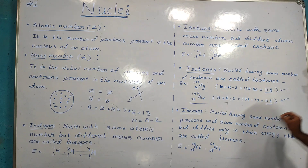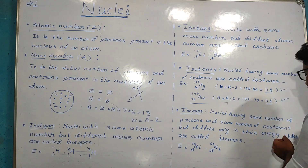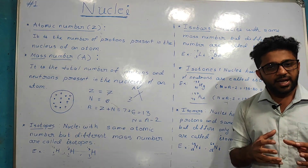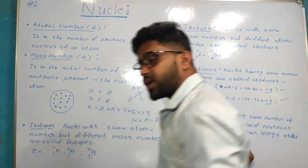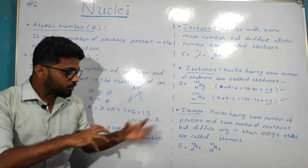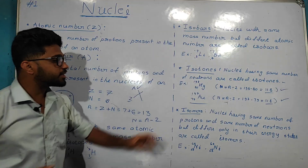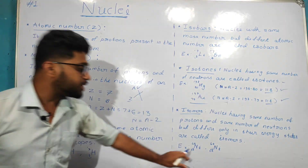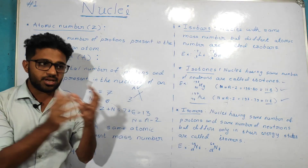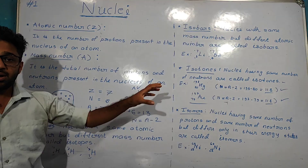Nuclei having the same number of protons and the same number of neutrons but differing only in their energy states are called isomers. The number of protons and neutrons are the same, but these two atoms differ in energy state — such nuclei are isomers. An example is nickel.